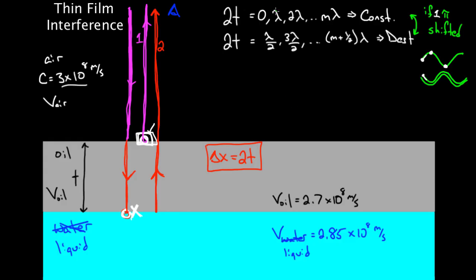Look, this wavelength — there's going to be a certain wavelength in the air, or this material one, I'll call it lambda A. It could be air, or anything that light can travel through. And then it's also going to have a certain wavelength in the oil, and the wavelength in this oil is going to be different. I'll call this wavelength B.